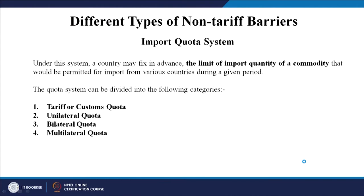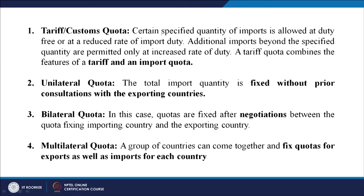Different types of non-tariff barriers include the import quota system. Under this system, a country may fix in advance the limit of import quantity of a commodity — you can only import up to a certain level; beyond that it is not permitted. The quota can be divided into categories: tariff or customs quota, unilateral quota, bilateral quota, and multilateral quota. Customs quota means a certain specified quantity of imports is allowed at duty-free or at a reduced rate; additional imports beyond the specified quantity are permitted but only at an increased rate of duty. A tariff quota combines the features of a tariff and an import quota.